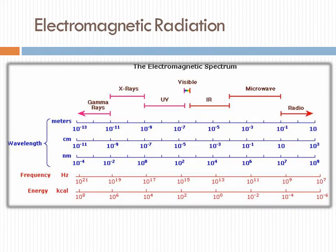Electromagnetic radiation classification — this table shows the electromagnetic spectrum. From left to right, the electromagnetic spectrum is divided into: first gamma rays, then X-rays, then UV, then visible, then IR, then microwave, and the last one is radio frequency, also known as NMR spectroscopy.